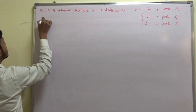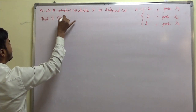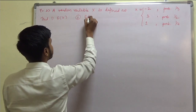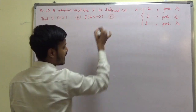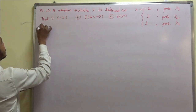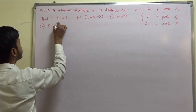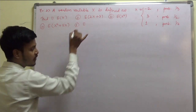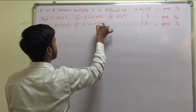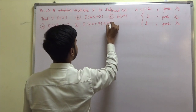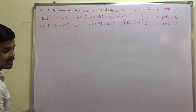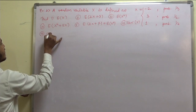We have to find out: number 1, expectation of x; number 2, expectation of 2x plus 3; the third one is expectation of x squared; next is expectation of x squared plus 5x; next is expectation of 2x plus 7 plus expectation of x squared; sixth is variance of x; and the last one is standard deviation of x.